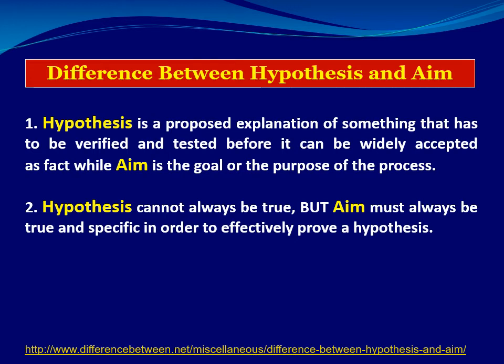The pathophysiology of depression involves reduction of serotonin in the CNS. So the aim of an experiment might be to investigate the effect of a certain drug on depression in rats or mice. This is the aim — the purpose of the process — to test the antidepressant effect of the drug in this model of depression. The aim must always be true and specific, while the hypothesis cannot always be true.